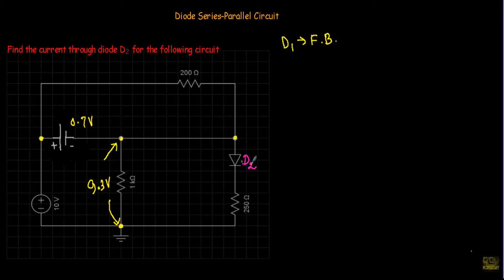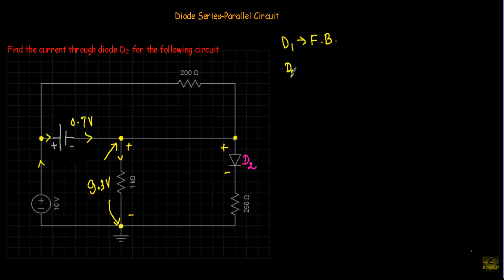This 1kΩ branch is in parallel with diode D2 and the 250Ω resistor. The current through the 1kΩ resistor flows such that its top terminal is positive and bottom is negative. The positive terminal connects to the P side of D2 and the negative to the N side, so the 9.3V drives diode D2 into forward bias.